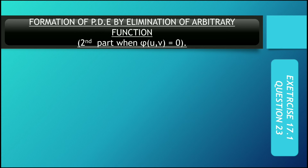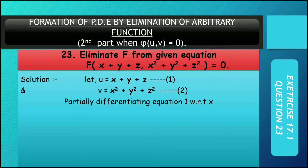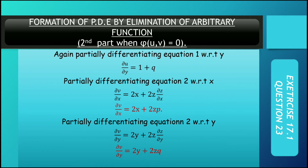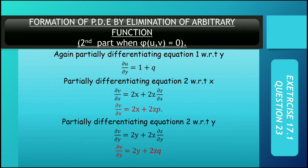Moving to question number 23, which is a similar one. Here u = x² + y² + z² and v = x + y + z. Differentiating with respect to x: for x² + y² + z², we get 1 + p for d/dx portion. For z²: d/dx of z² = 2z(dz/dx) = 2zp. So d/dx gives 2x + 2zp, and d/dy gives 2y + 2zq.